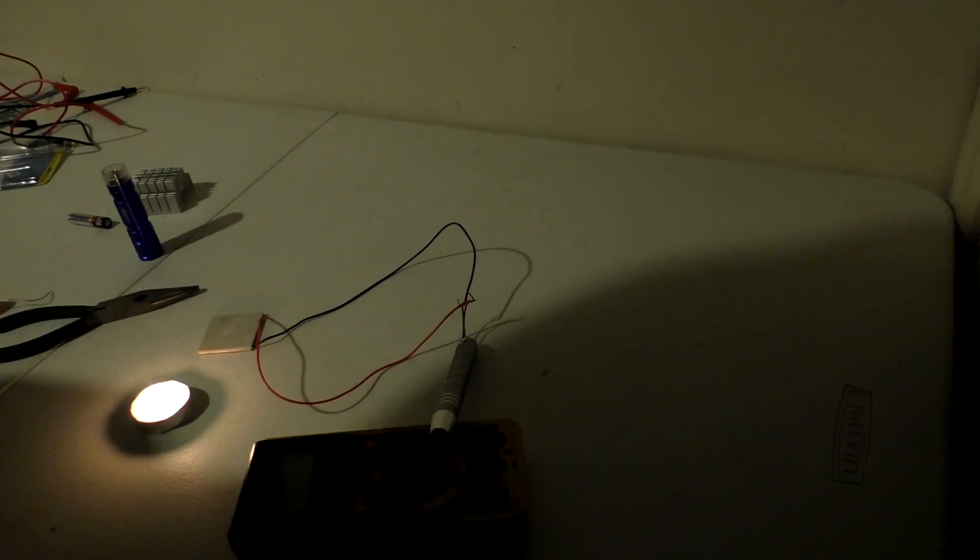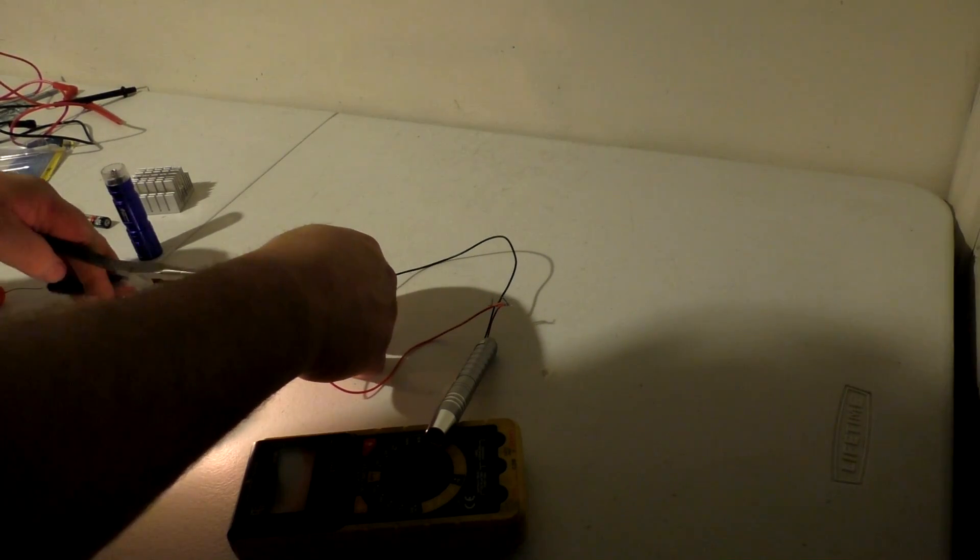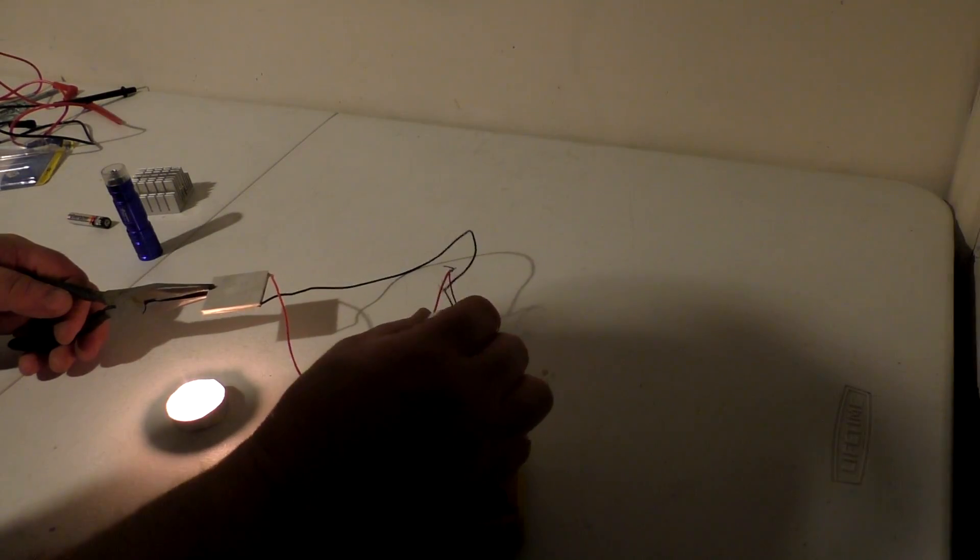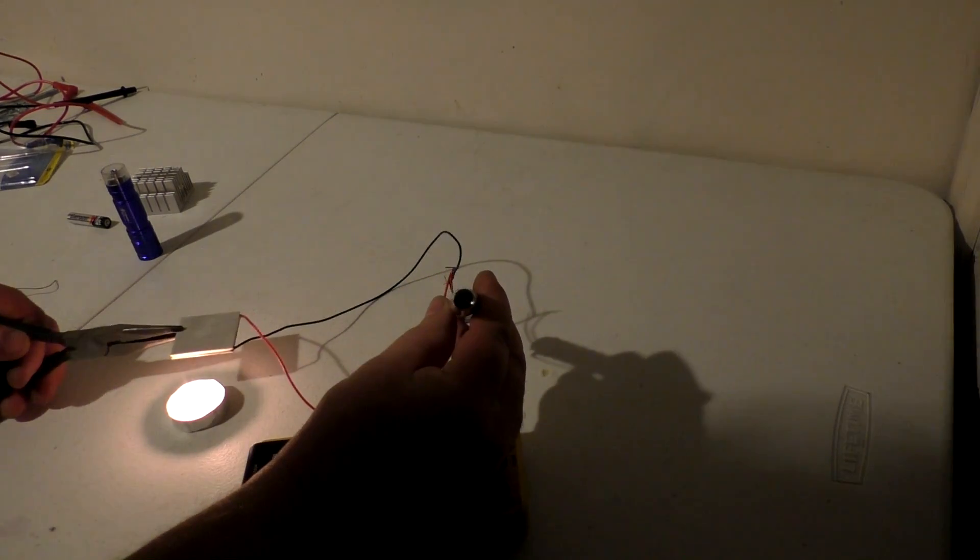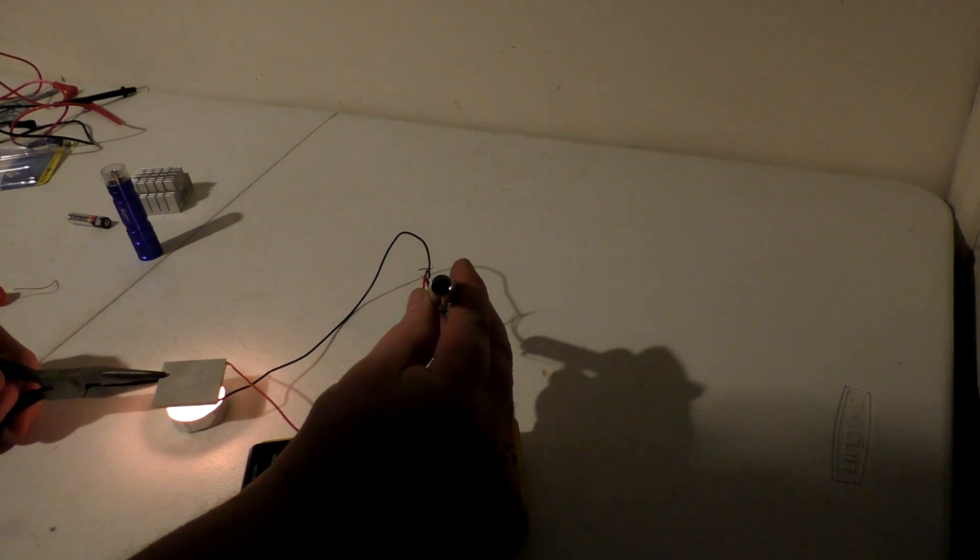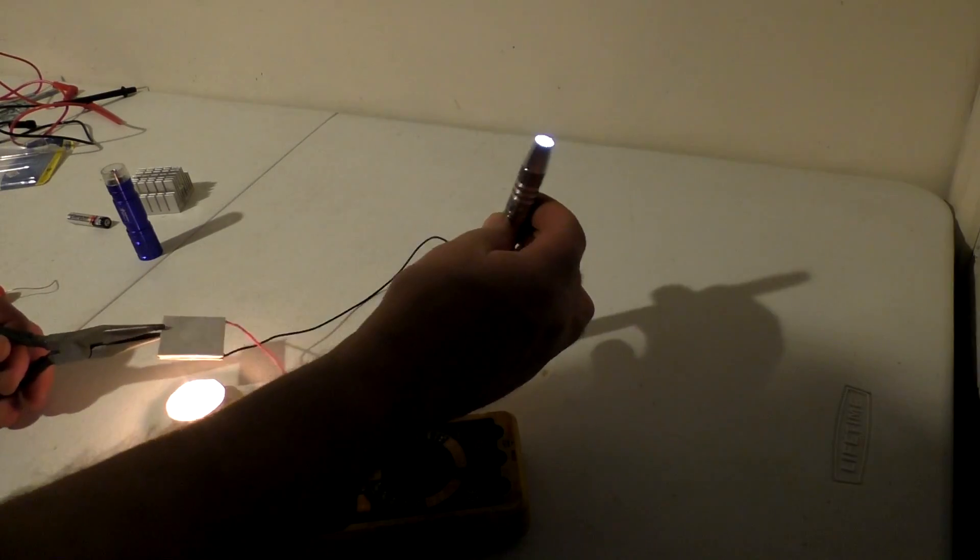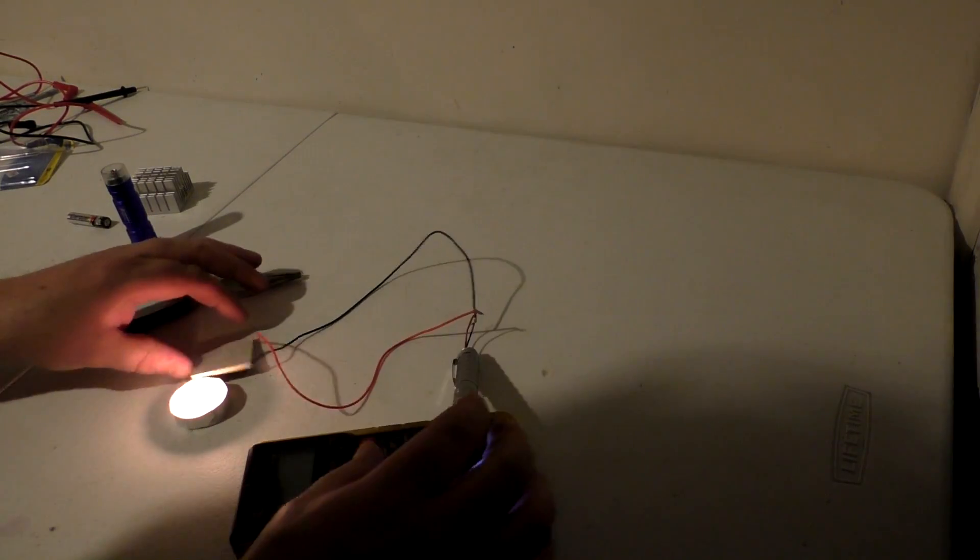All right time for the initial test. Got a candle glowing here. I'm going to hook a heat sink up to this Peltier disc. Got it wired into this light. I'm going to hold this over the flame. Look at that. Pretty neat.